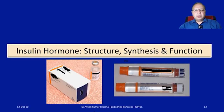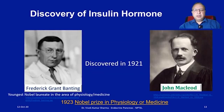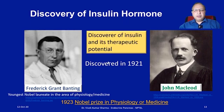Now let's talk about the insulin hormone — its structure, synthesis, and functions. Discovery of insulin was done in 1921 by Frederick Grant Banting and John MacLeod, for which they were awarded the Nobel Prize in Physiology or Medicine in 1923. They are credited for discovering insulin and its therapeutic potential in patient management.